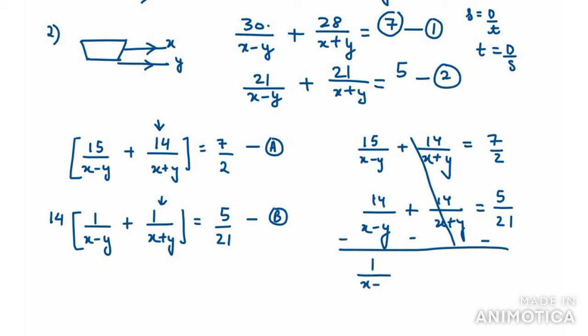The second terms will cancel when we subtract. You'll get 1 over x minus y equals 7 over 2 minus 5 over 21. Wait, I forgot to multiply 5 over 21 with 14, so it becomes 10 over 3. So we have 7 over 2 minus 10 over 3. When you solve this, you get 1 over 6. So 1 over x minus y equals 1 over 6. Taking reciprocal, x minus y equals 6.